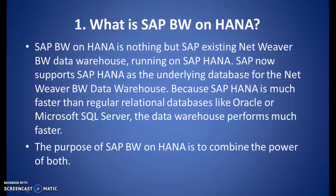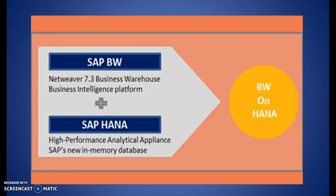What is SAP BW on HANA? SAP BW on HANA is SAP's existing NetWeaver BW data warehouse running on the SAP HANA platform. SAP now supports HANA as the underlying database for the NetWeaver BW data warehouse. Because SAP HANA is much faster than regular relational databases like Oracle or MS SQL Server, the data warehouse performs much faster. The purpose of SAP BW on HANA is to combine the power of both BW and HANA.